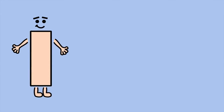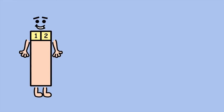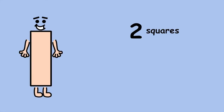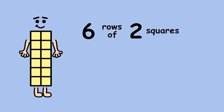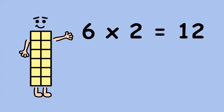If you know your times tables, there's an even quicker way of working out my area. We know each row has two squares. How many rows are there? 6. So 6 groups of 2, or 6 times 2 equals 12.